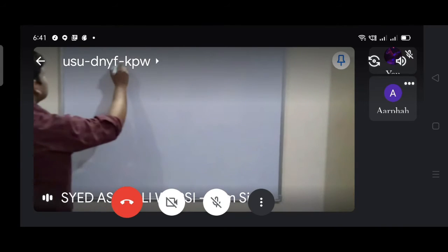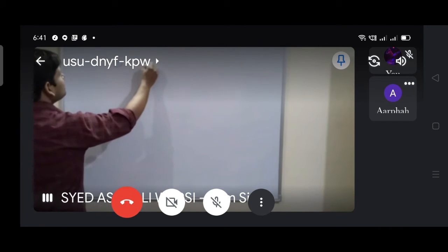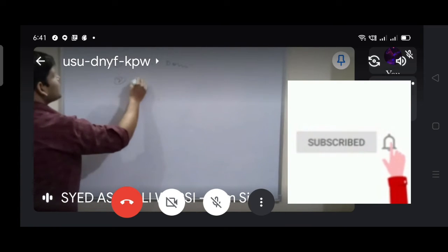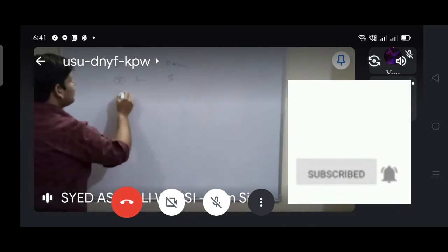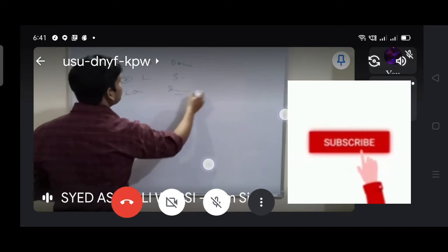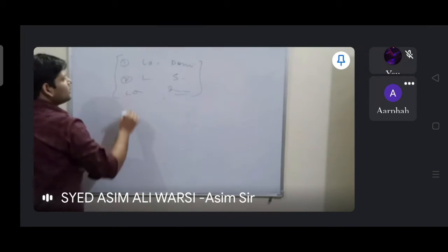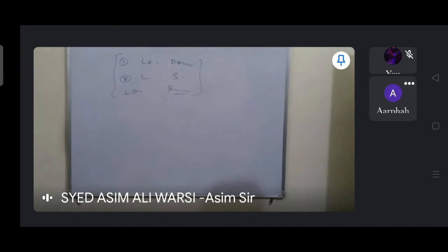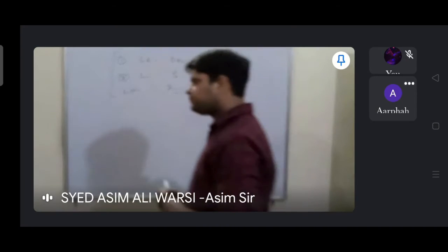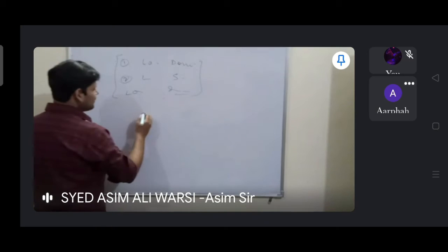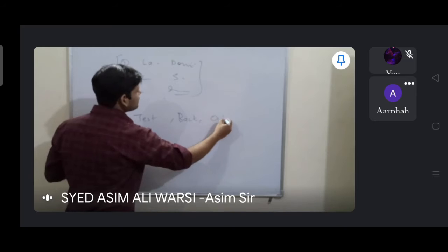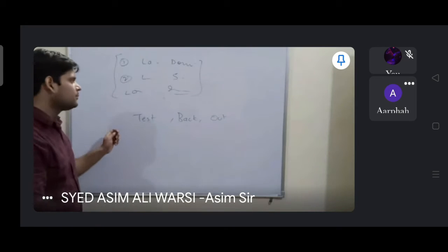In the 10th class, we have studied law of dominance, law of segregation, and law of independent assortment. And here, we have studied the 10th class process from the advanced level. In addition, we have studied test cross, back cross, and outcross. We have studied the three crosses.